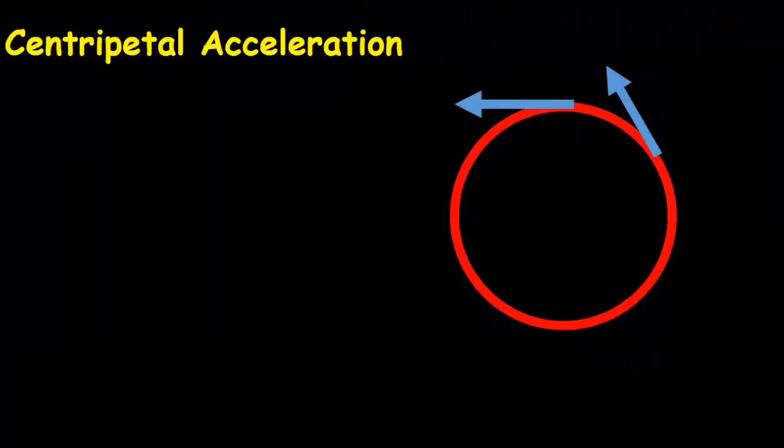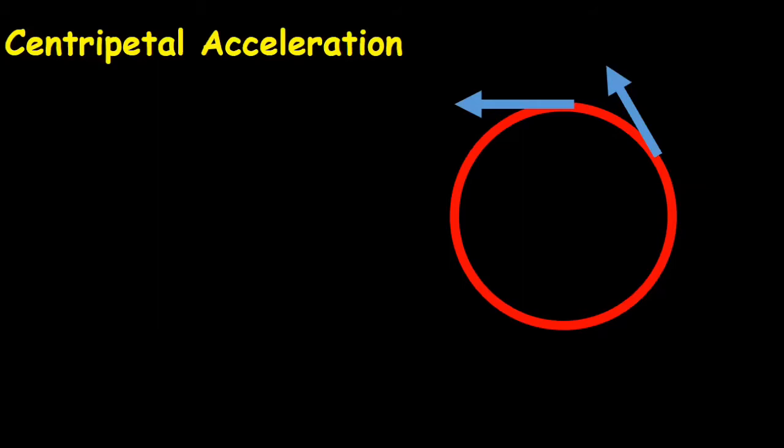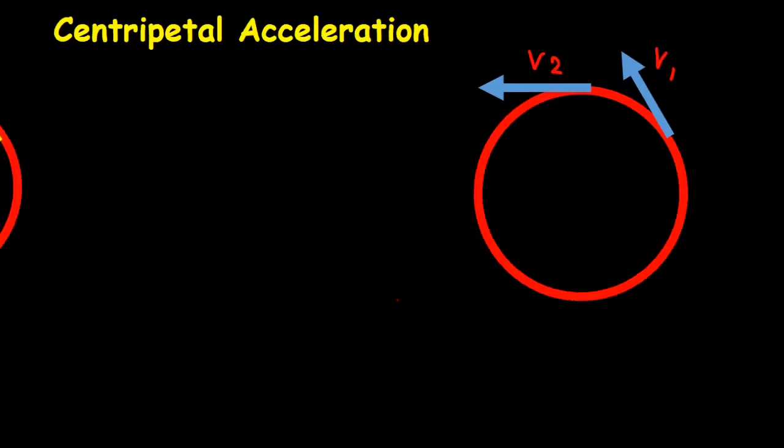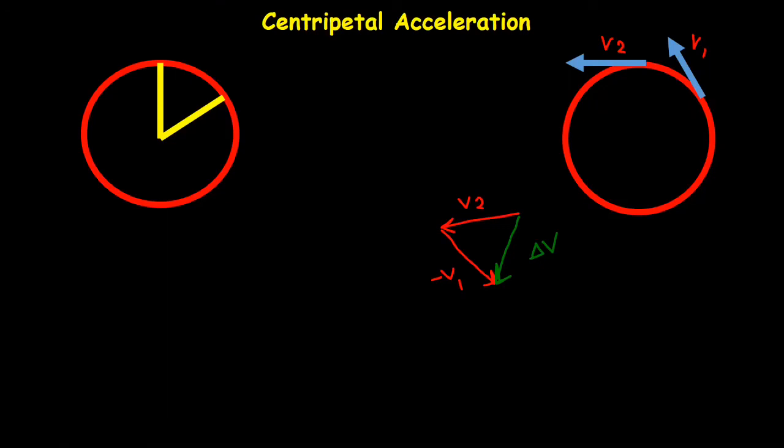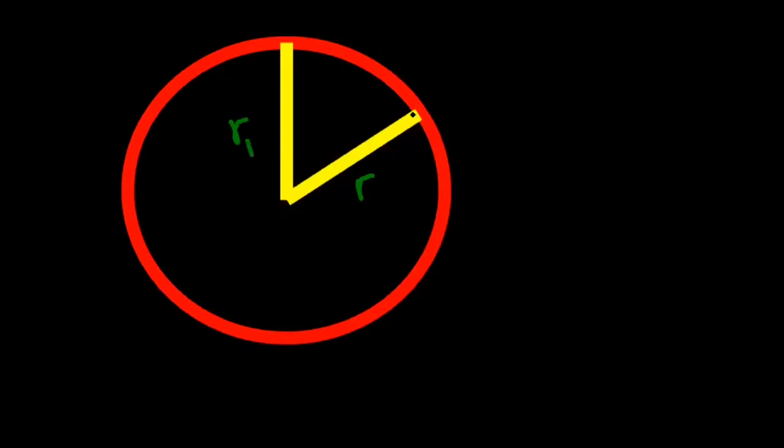In circular motion we name acceleration centripetal acceleration. So as you can see here, if this one is our V1 and this one is our V2, we already discussed that. V2 minus V1 is ΔV that makes a triangle for us. On the other hand, this one is R that is radius of our circle and R. And this part is arc.